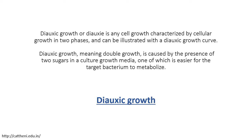So what is diauxic growth? Diauxic growth, or diauxie, is any cell growth which is characterized by cellular growth in two phases. Now if you remember the normal growth curve, there is a single growth curve that we observe. But in case of diauxic growth, there are two growth curves which are observed — and that's the reason the term is diauxic, meaning double growth. It is caused by the presence of two sugars in the culture media, and that's the reason bacteria shows two growth phases.